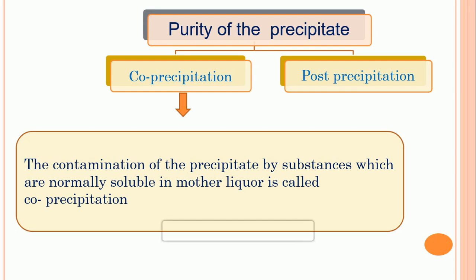This is the most serious error. When you want to remove this error, take some major precautions to avoid co-precipitation, as it cannot be simply removed by washing with any suitable solvent. To revise: contamination of the precipitate by substances which are normally soluble in the mother liquor is called co-precipitation. During the formation of a precipitate, some impurities get precipitated over the main precipitate — that is called co-precipitation.